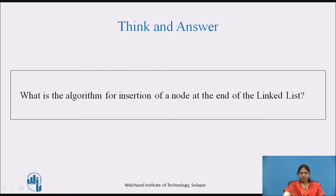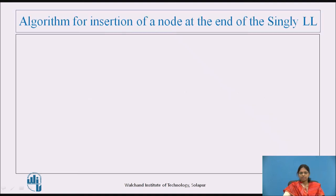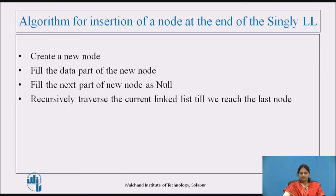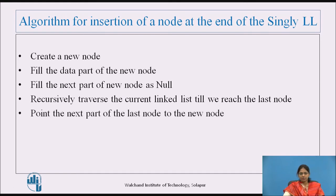Algorithm for insertion of a node at the end of the singly linked list: First, create a new node. Fill the data part of the new node. Fill the next part of the new node as null. Recursively traverse the current linked list until we reach the last node using the current pointer. Then point the next part of the last node to the new node via the current pointer.